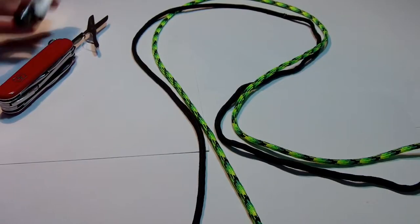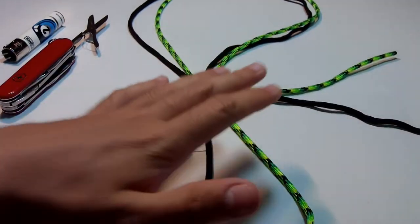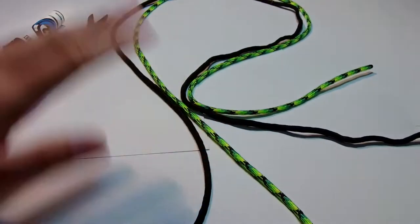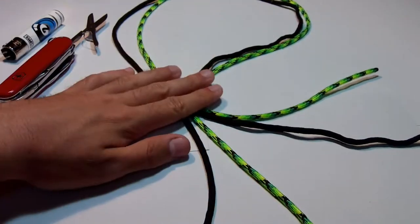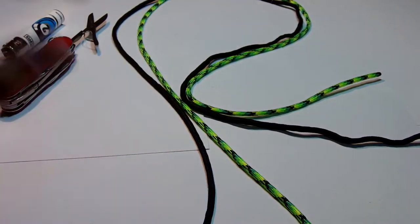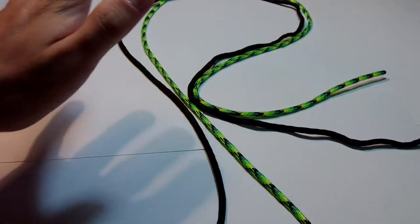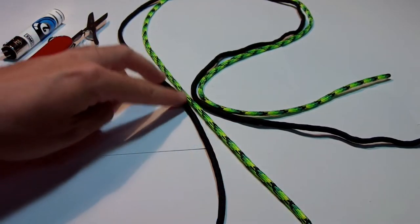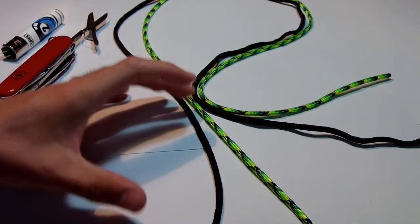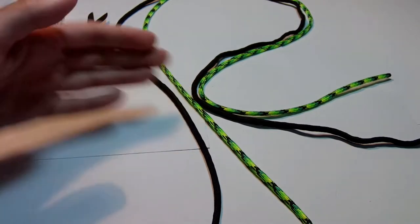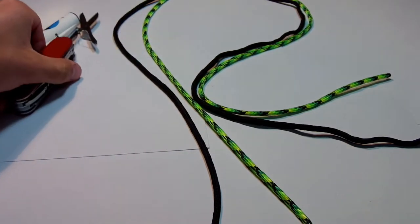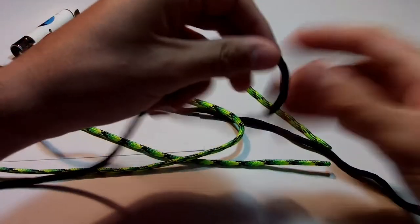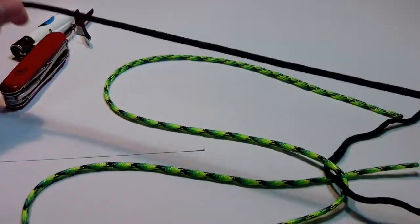We have all of our tools, the paracord cut to the length that I want. Don't forget to use a ruler to check the measurements. What you need to do right now to start this is to choose what color will be the loop behind. I want the black to be part of the loop that will allow my lanyard to be attached to this knife, for example.